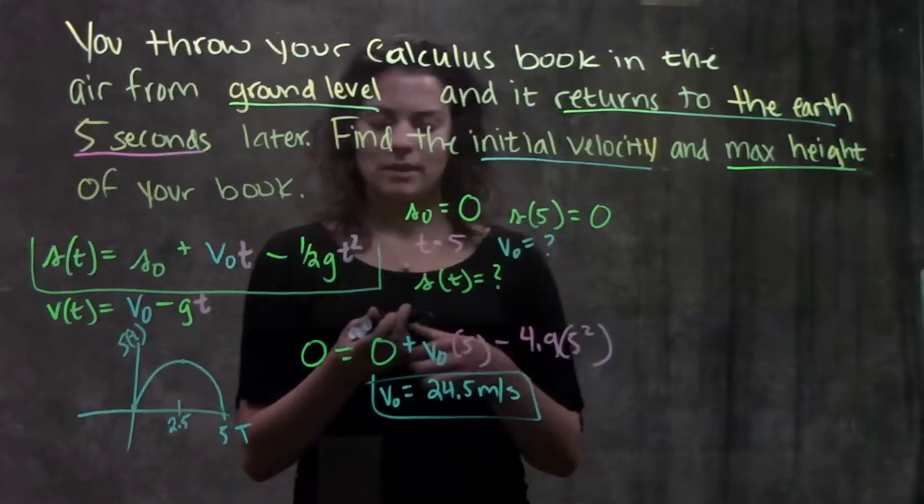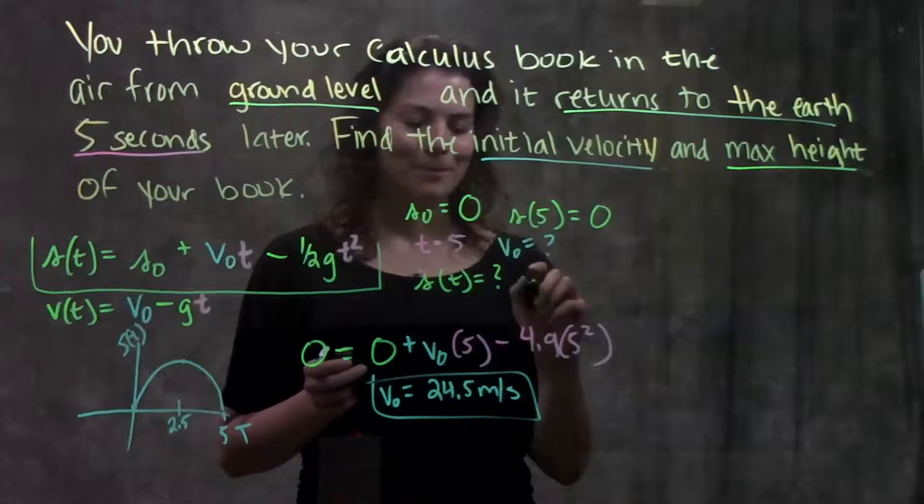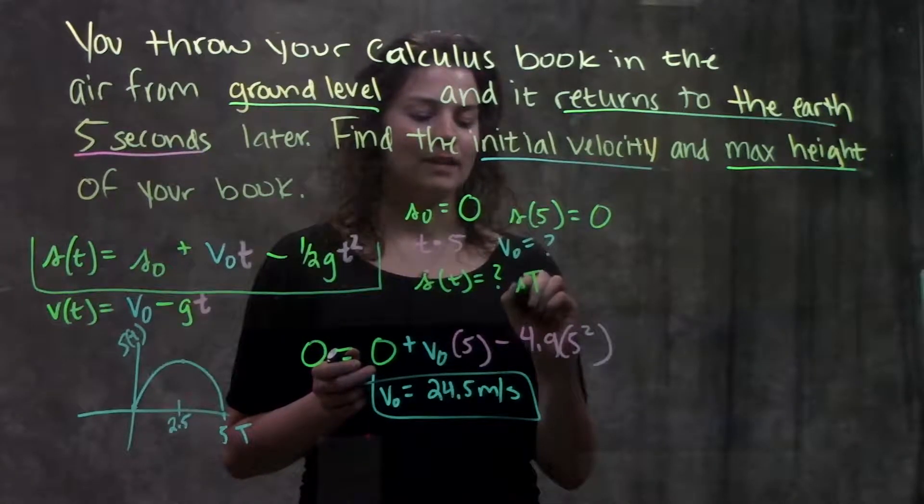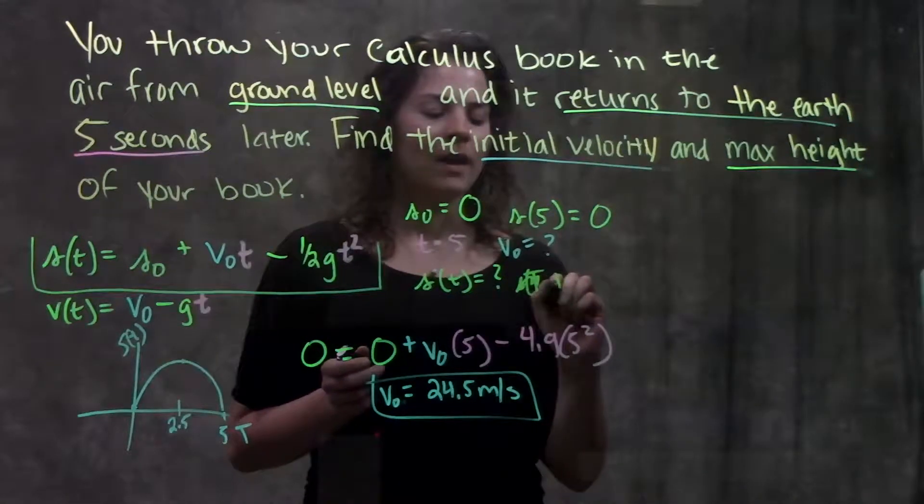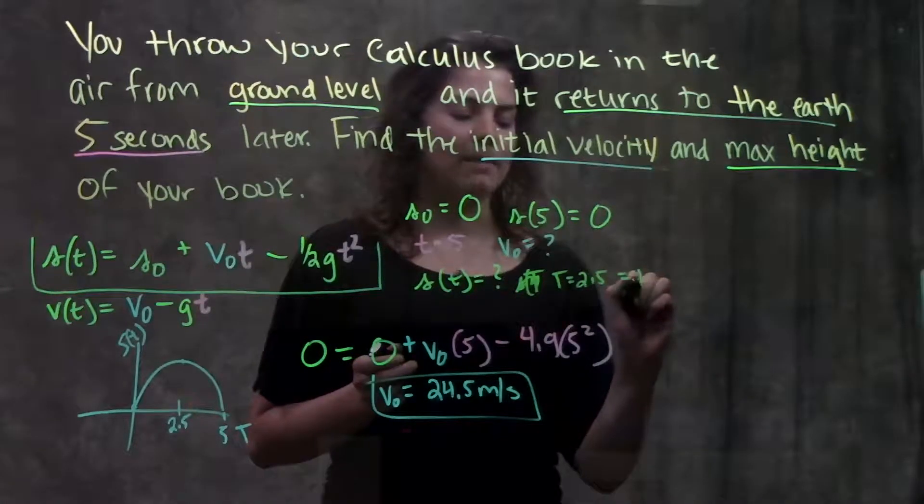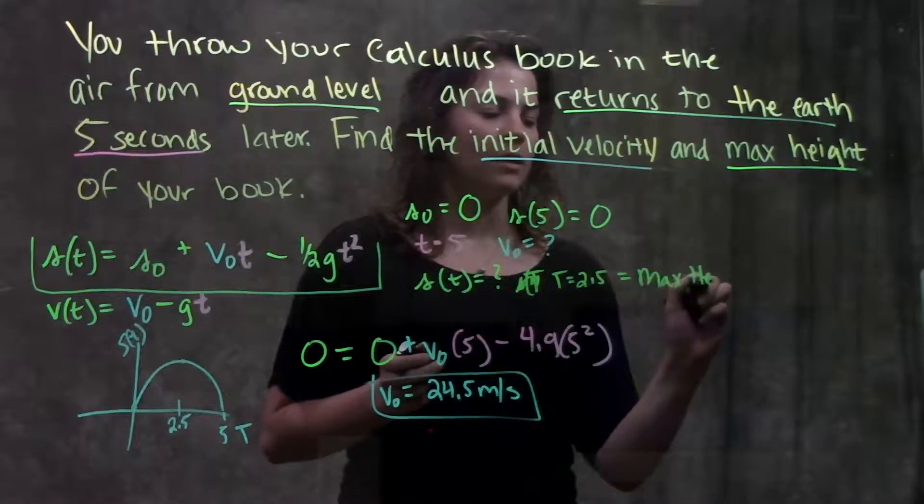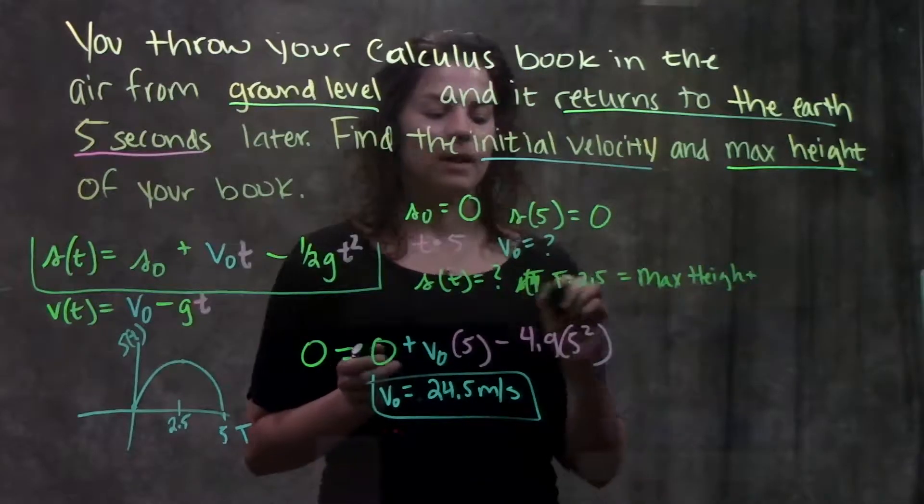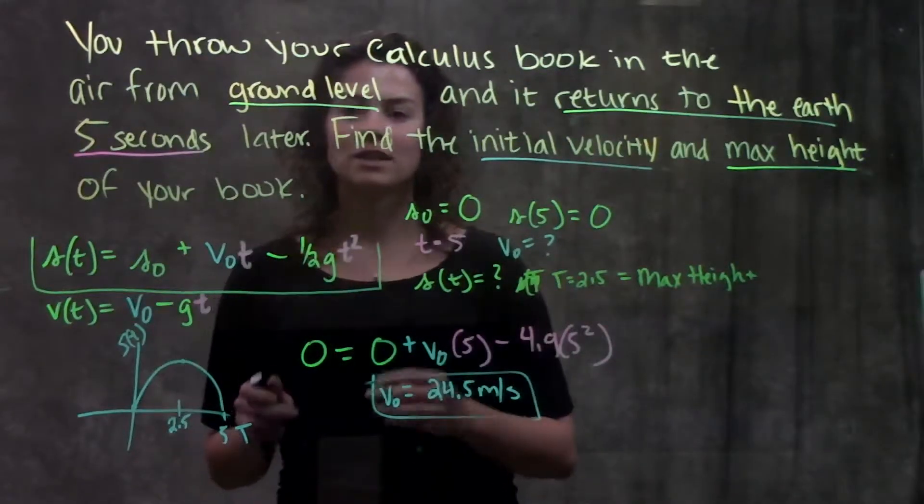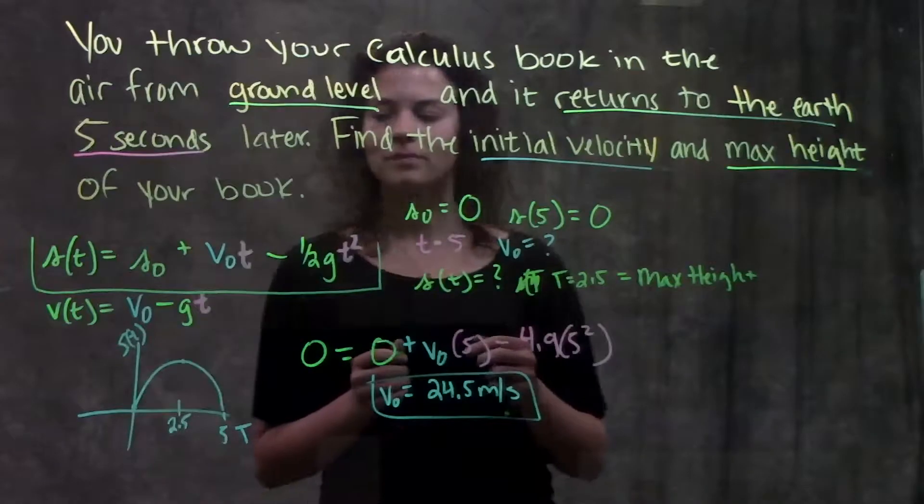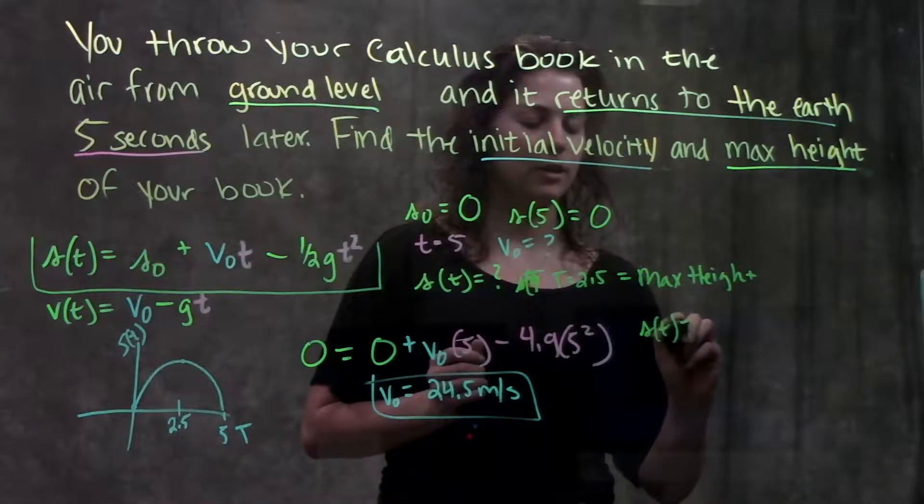So using that information that I just deduced, I'll say that when t equals 2.5 that's my maximum height. So I'm going to do the same thing, plug in all my values into this function, see what my s(t) is. So now I have s(t), which is my unknown, is equal to s₀, which is zero, plus v₀t. Now I know those values.